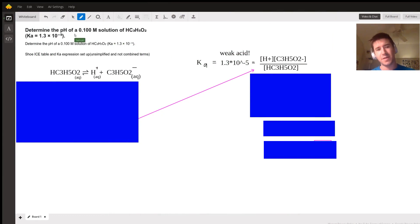Right now we're supposed to determine the pH of a 0.1 molarity solution, HC3H502, with a Ka value of 1.3 times 10 to the negative fifth. We're supposed to show our ice table and Ka expression.